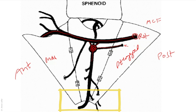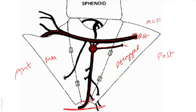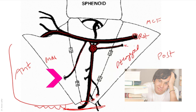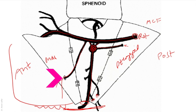Inferiorly, the pterygopalatine fossa communicates with what? There is a big foramen here and a small foramen there. If this is the maxilla, what is below? The posterior superior alveolar nerve is this one — it goes into the maxilla to supply the molar teeth. But what about behind the maxilla?